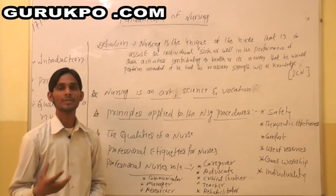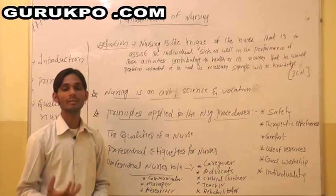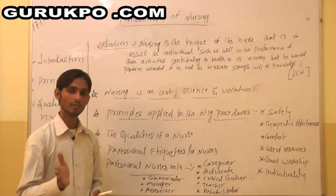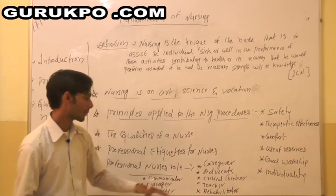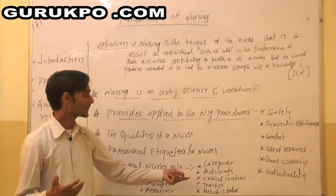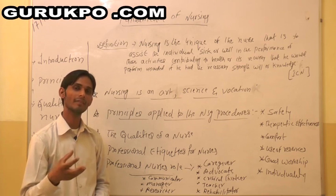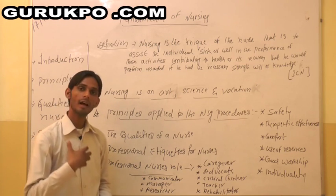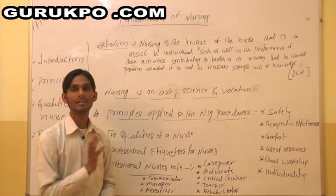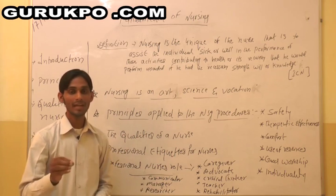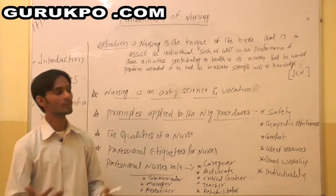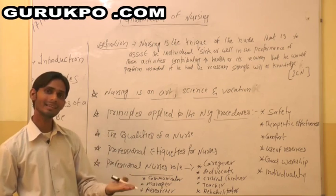Next is advocate — she is speaking for the client. Whatever problem there is, she talks to senior staff and doctors on their behalf; she is advocating for them and will try to solve the problems. Next is the role of critical thinker — the nurse is a critical thinker. Whenever and wherever an emergency occurs, the nurse can take her own decision to save a person's life, either in OT or general medical or surgical wards. In an emergency when nobody knows what to do, the nurse can take certain steps to save the client's life.